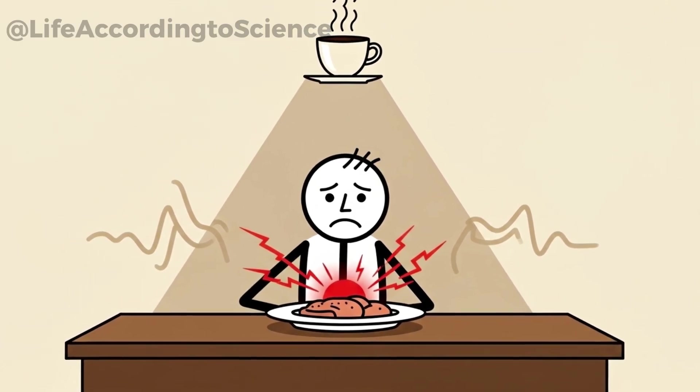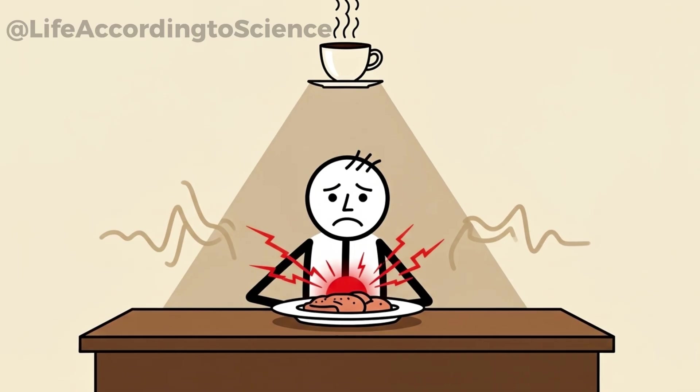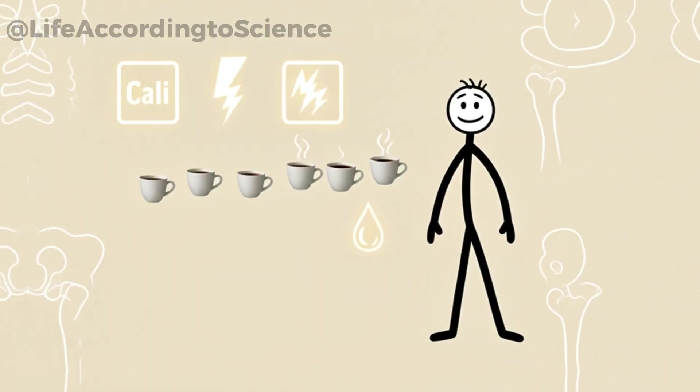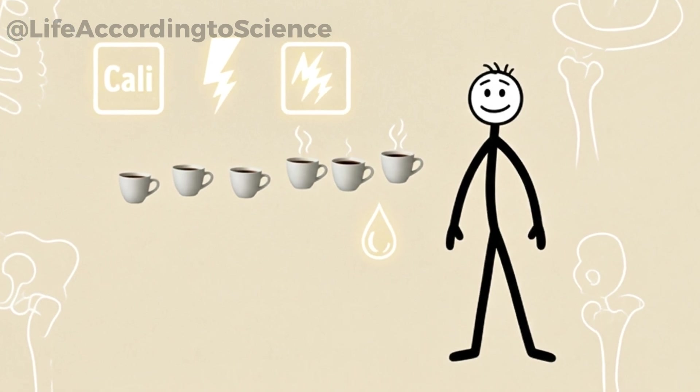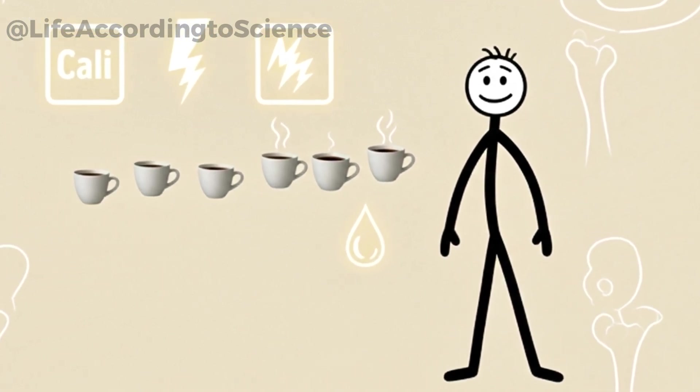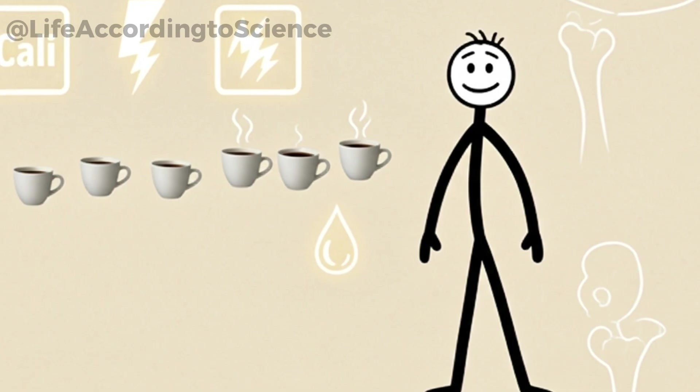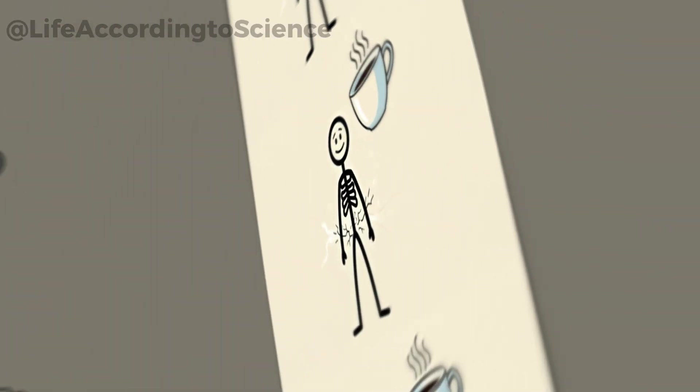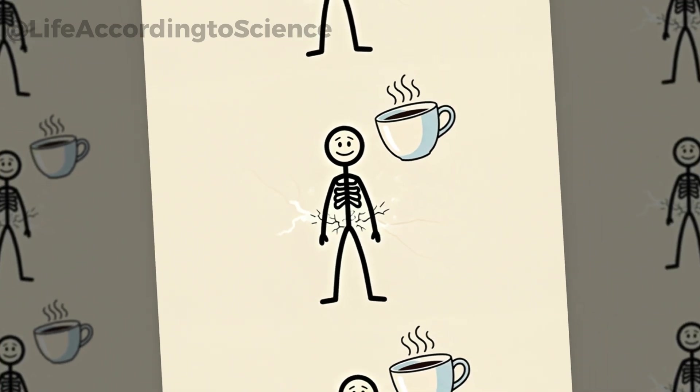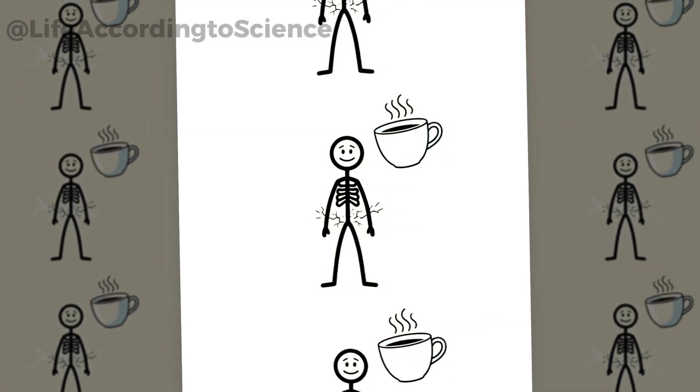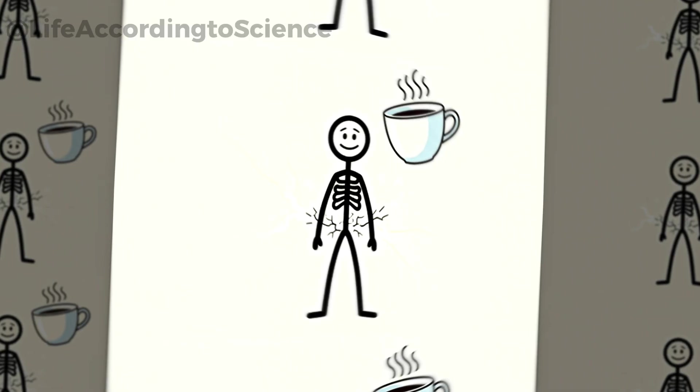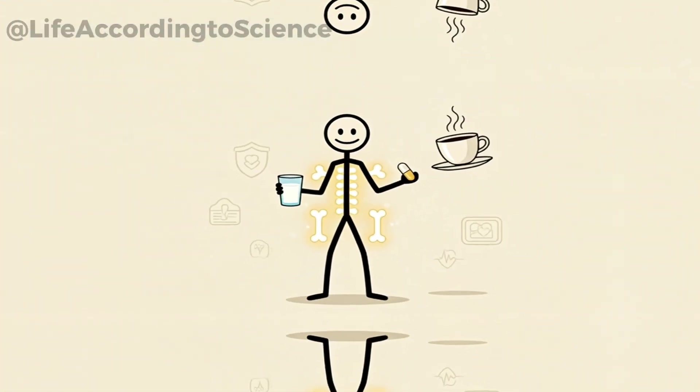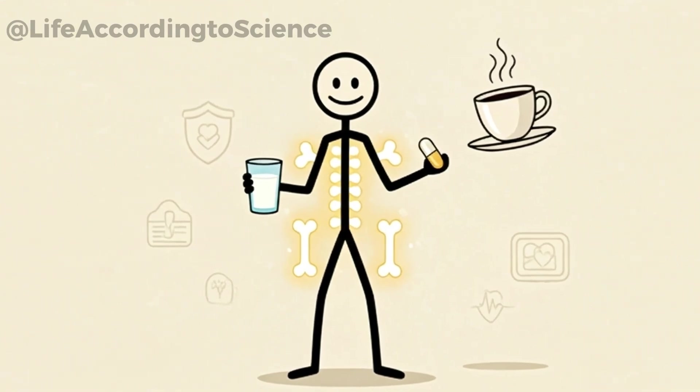Beyond the jitters, five cups of coffee daily can interfere with nutrient absorption. Caffeine is known to reduce the absorption of calcium, magnesium, and iron, minerals vital for bone strength, energy, and oxygen transport. Studies suggest that long-term high coffee intake may contribute to bone thinning or even osteoporosis if paired with low dietary calcium. That's why some heavy coffee drinkers are advised to increase dairy or supplement intake.